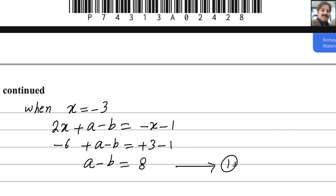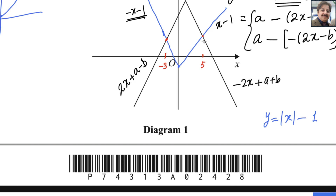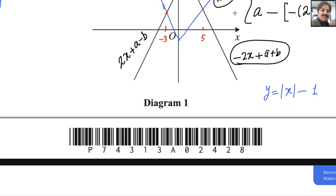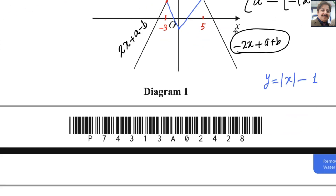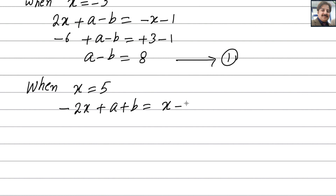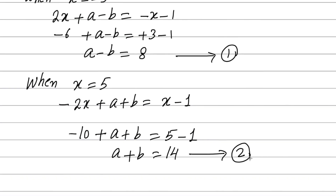When x equals 5, the other pair of lines intersects. Setting minus 2x plus a plus b equal to x minus 1, and substituting x equals 5: minus 10 plus a plus b equals 5 minus 1 equals 4. Bringing minus 10 to the right side gives a plus b equals 14. This is equation number two. Now we solve equations one and two simultaneously.